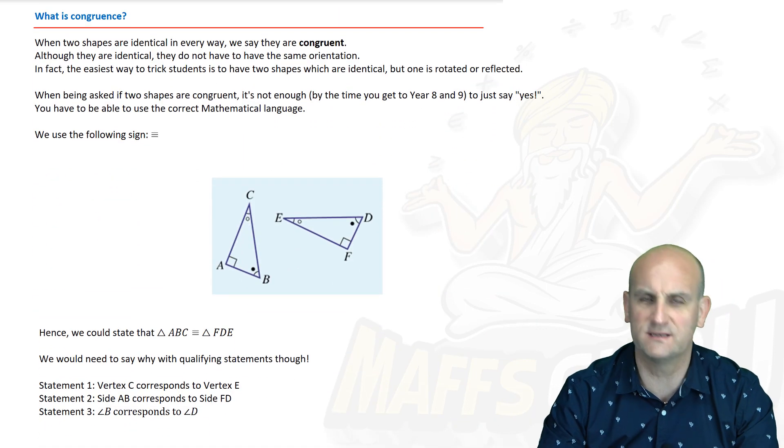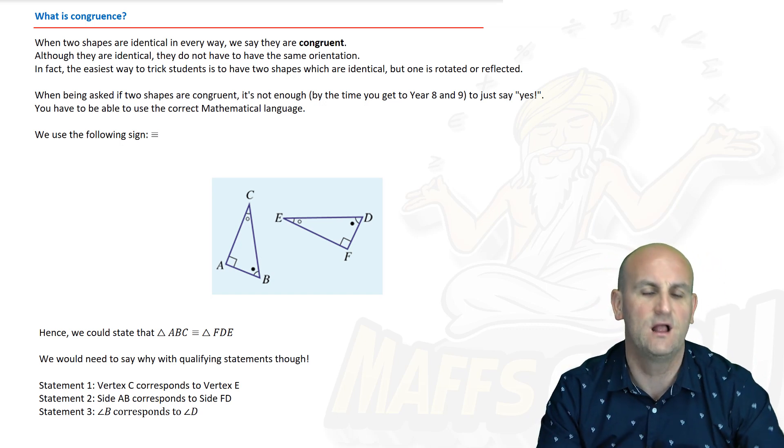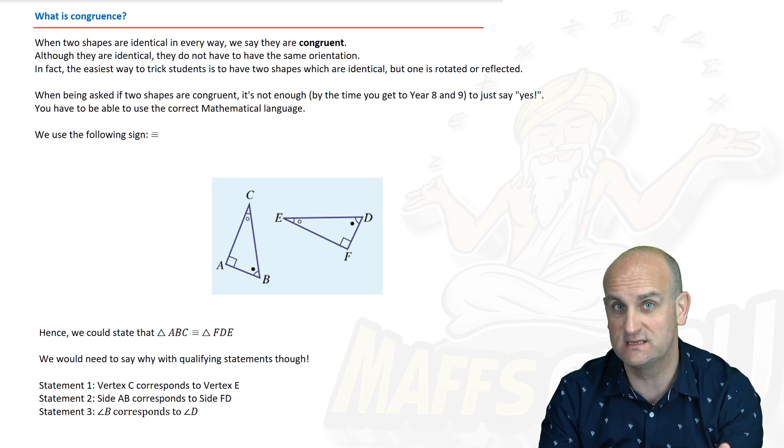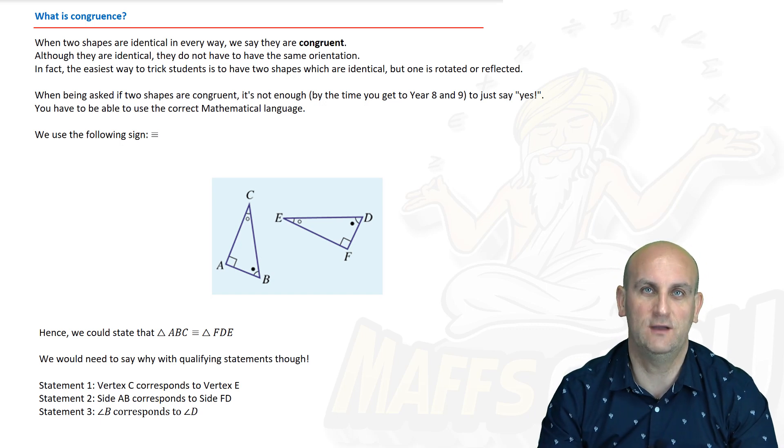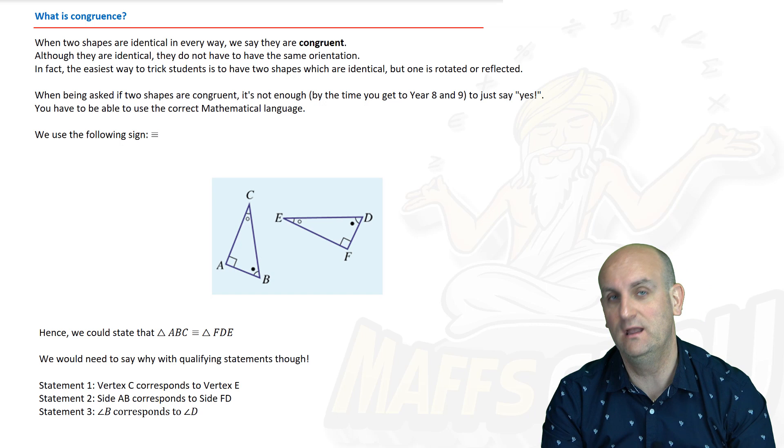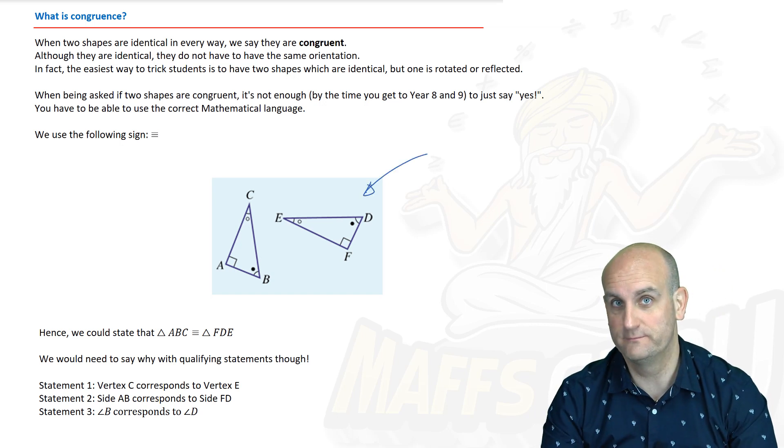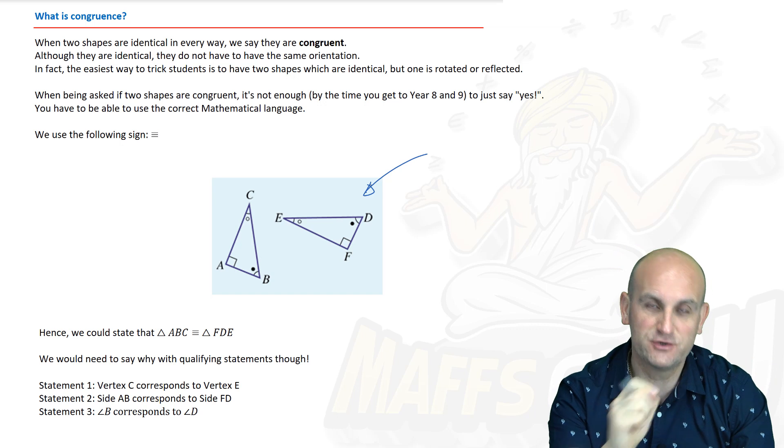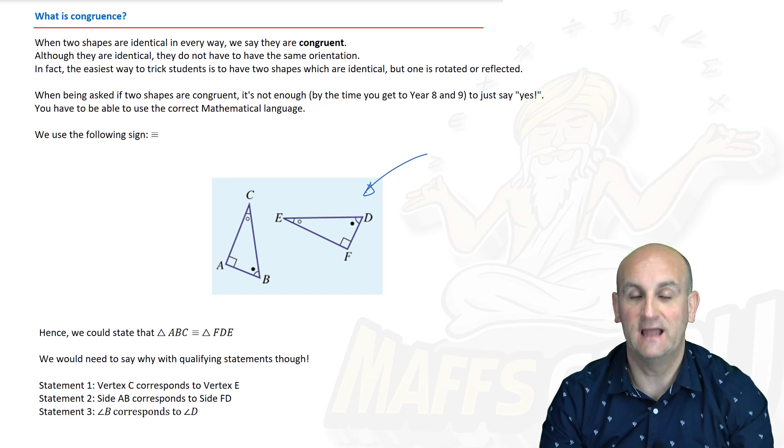So what is congruence? Now if you have a summary book, this is the type of thing you would write in your summary book. You would go congruence means the triangles or the shapes are exactly the same size. That means their lines are the same length and their angles are the same size as well. The triangles are identical, but how are we going to try and trick you? Well look at these two triangles here, would you say they were congruent? Some people out there will go no they're not congruent because one of them has been turned and that's the trick.